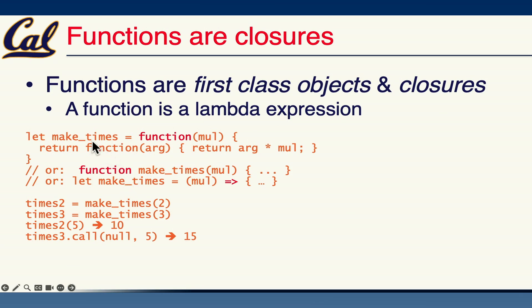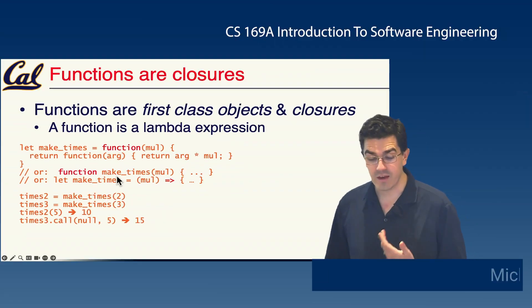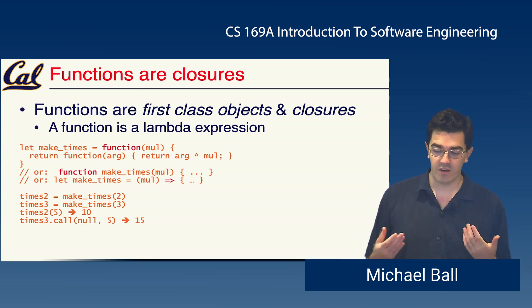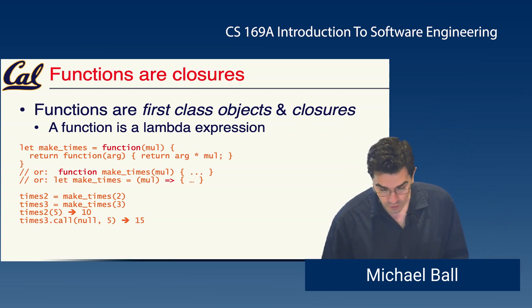Typically there are a couple ways to declare a function in JavaScript. We can give it a variable name, so we can say let make_times equals function which takes in some argument. We can return a function, we can declare a function with the argument or actually with the name make_times, and this makes the function in its current scope. If that's a global scope it would be a global function; if it's nested, it would be in whatever scope.